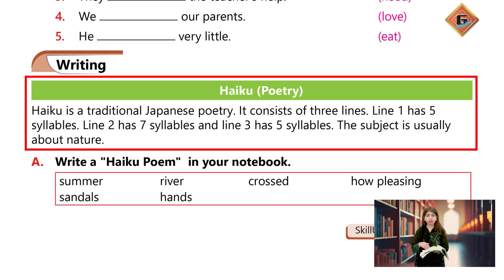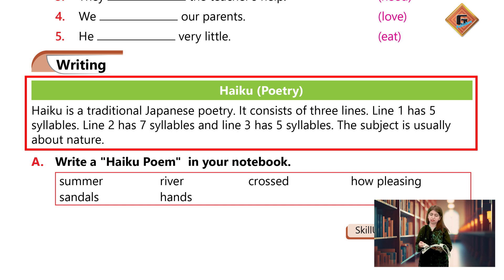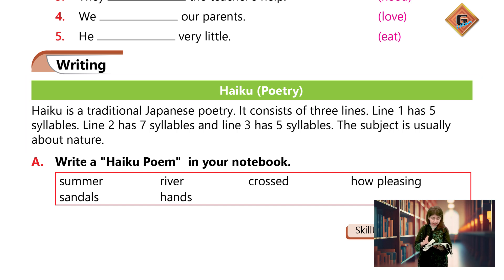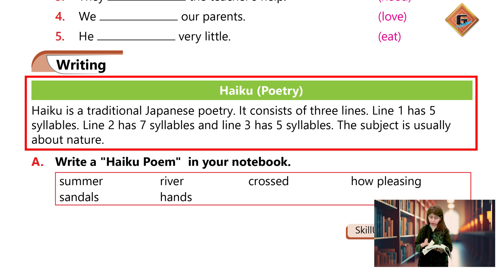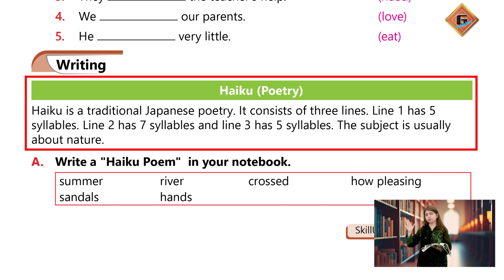Aur teen lines mein aap jitne marzi words lele sakte hain. First line ke andar humne har hal mein 5 syllables daalne hoti hain — chahe saare ke saare one syllable words lene ho, chahe do words lene ho, do syllable ka lene, ek teen syllable ka lene — lekin total number of syllables jo hone chahiye woh is ek line mein five hone chahiye. Second line mein seven syllables hone chahiye.